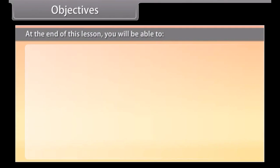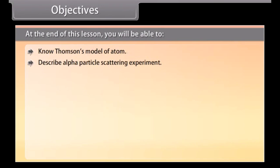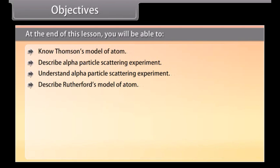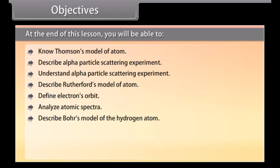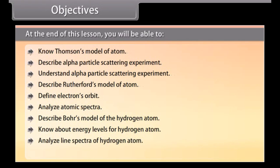At the end of this lesson you'll be able to know Thomson's model of atom, describe alpha particle scattering experiment, understand alpha particle scattering experiment, describe Rutherford's model of atom, define electrons orbit, analyze atomic spectra, describe Bohr model of the hydrogen atom, know about energy levels of hydrogen atom, analyze line spectra of hydrogen atom, know about De Broglie's explanation of Bohr's second postulate.